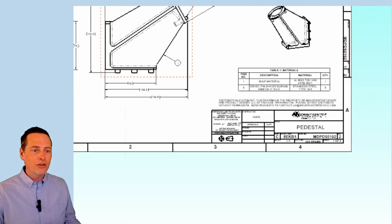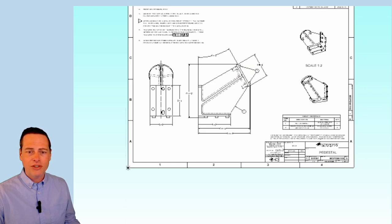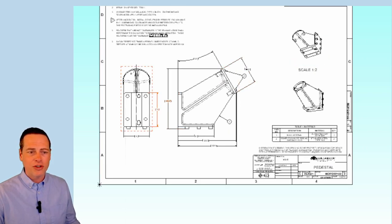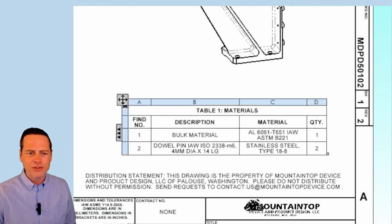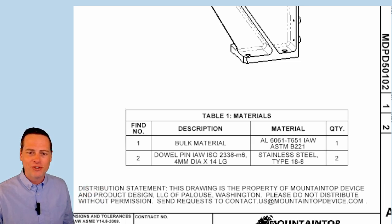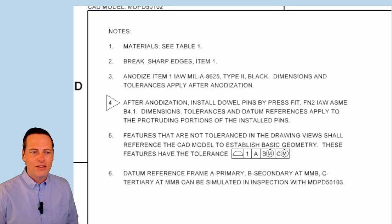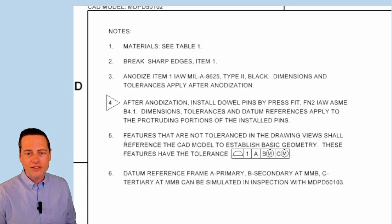I have a few views in the middle here that provide clarity on the geometry, plus a couple of views with reference dimensions to help someone quoting this part for a machine shop determine what size of material they need. I have balloon notes indicating two different items in a table corresponding to one of the general notes. One item is the bulk aluminum to be machined out, and the second is the two dowel pins that are pressed in. The general notes include materials table, breaking sharp edges, anodizing, and a note that dimensions and tolerances apply after anodization.